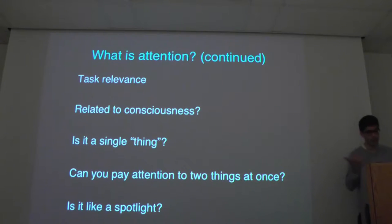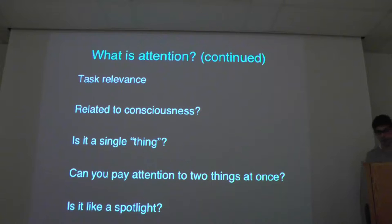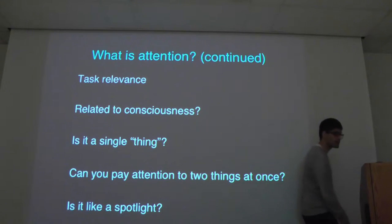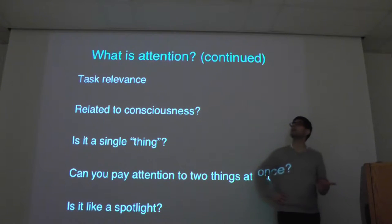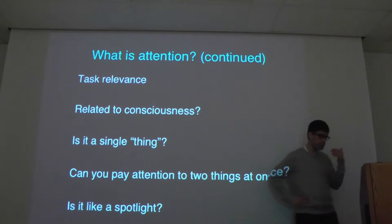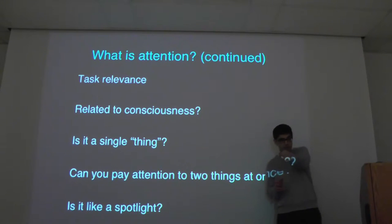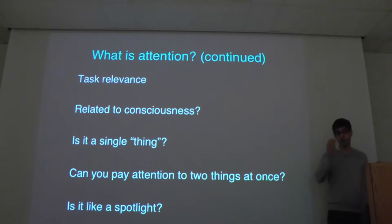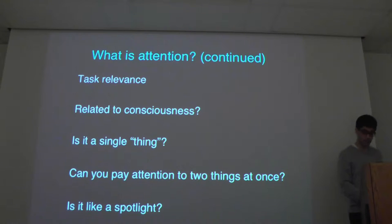Attention might seem very fuzzy and ill-defined, but you can actually find very direct neural measures of it — amazingly direct neural measures. So there's something real going on. Some of the questions people ask: Is it related to consciousness? If you attend to something, does that mean you have to be conscious of it? Is there even a single thing called attention, or are there actually lots of different things? Can you pay attention to two different things at once? Is it like a spotlight? People have actually done studies with proper psychophysical measurements of how wide the spotlight is, whether it shrinks or grows.